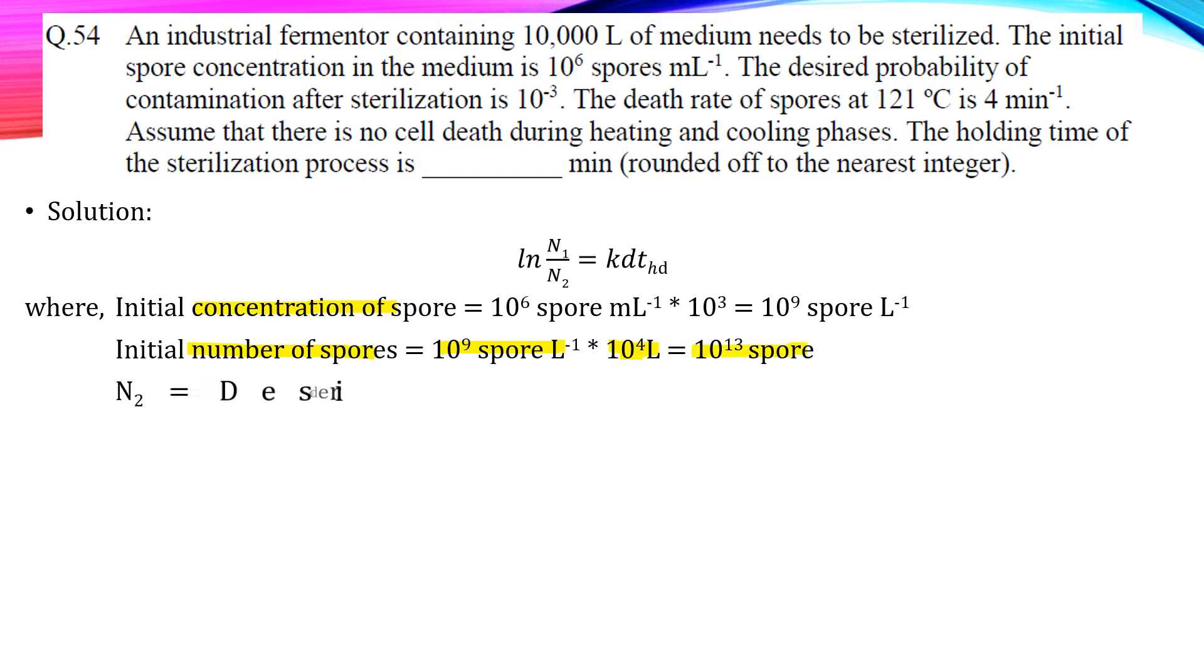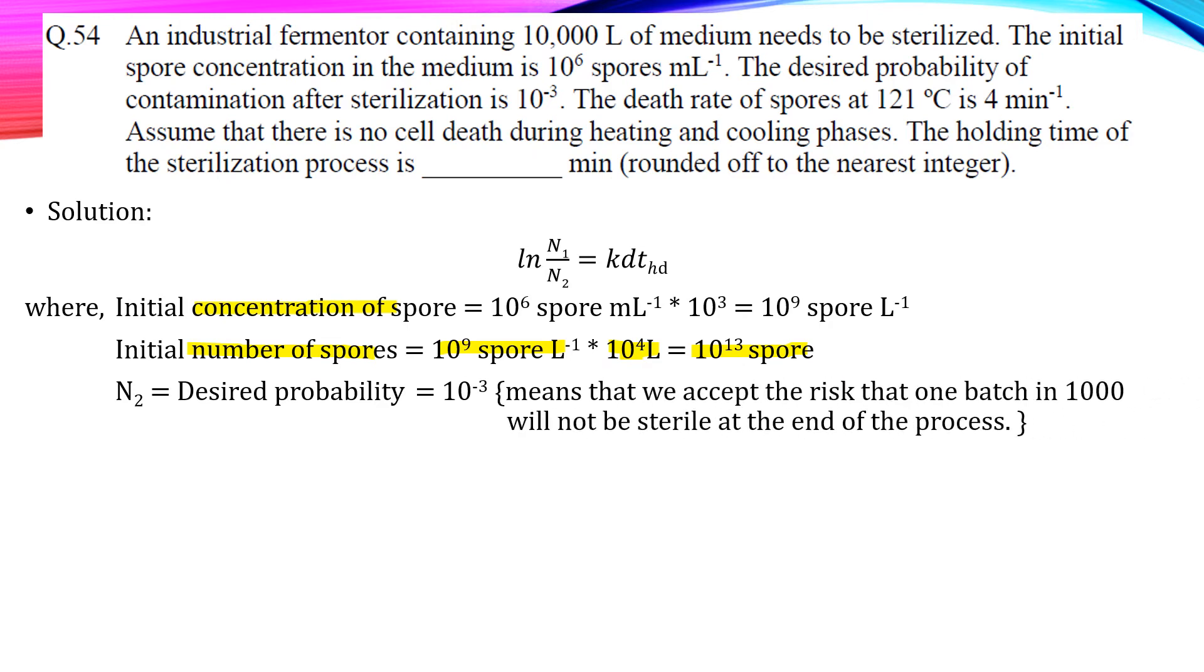Now N2 is the final number of spores after sterilization. But in the question they have given the desired probability that is 10 to the power minus 3. Which represents that one batch in 1000 will not be sterilized at the end of the process. And we can put this desired probability in place of N2 to find holding time to attain this probability.